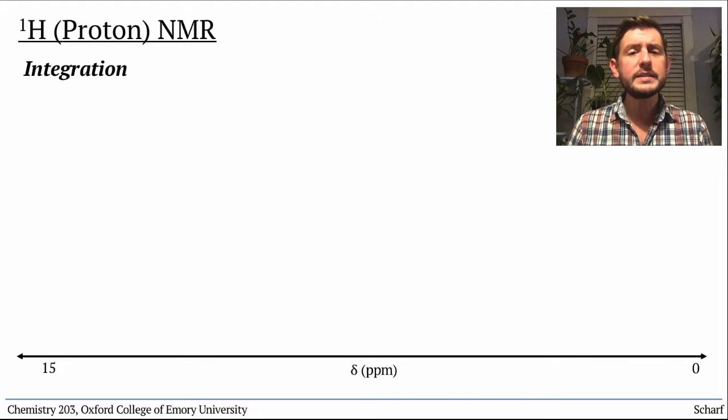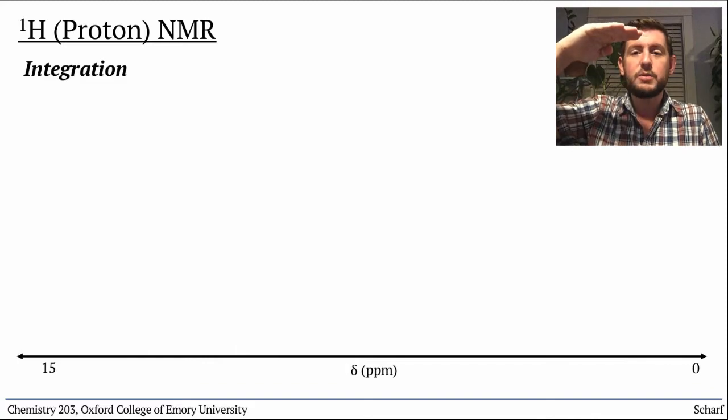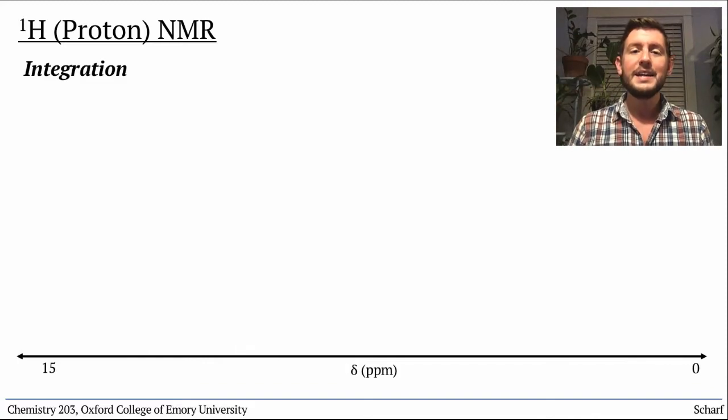Do you recall that I said that peak heights in carbon-13 NMR were not reliable for determining the number of carbons with a particular chemical shift? That's true. But lucky for us, the sizes of peaks in proton spectra are reflective of the relative number of hydrogens absorbing that frequency. But it's not precisely the height of the peak that reflects the number of hydrogens. It's the area under the peak, or to use the calculus term, the integration.